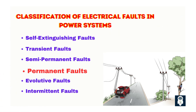Permanent faults cause significant disruption and cannot be resolved automatically — they require manual intervention by operators to restore service. These are persistent faults that result in physical damage to infrastructure, where protection systems isolate the faulted section but service restoration requires repairs. Examples include underground cable damage from excavation equipment cutting cables, and storm damage such as broken poles or conductor severance due to high winds, resulting in prolonged outages and high maintenance and restoration costs.